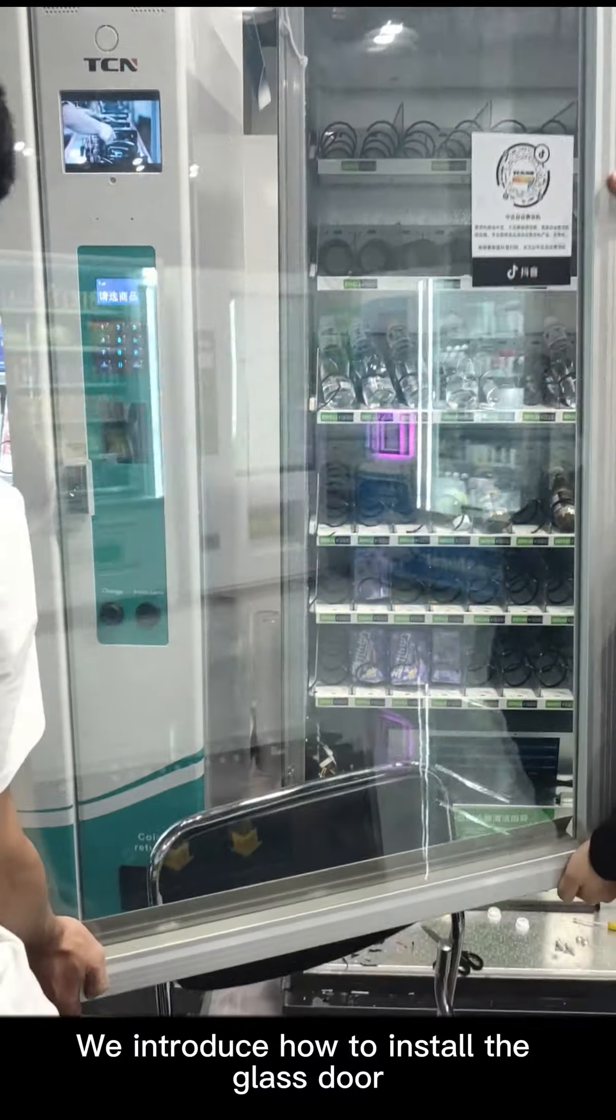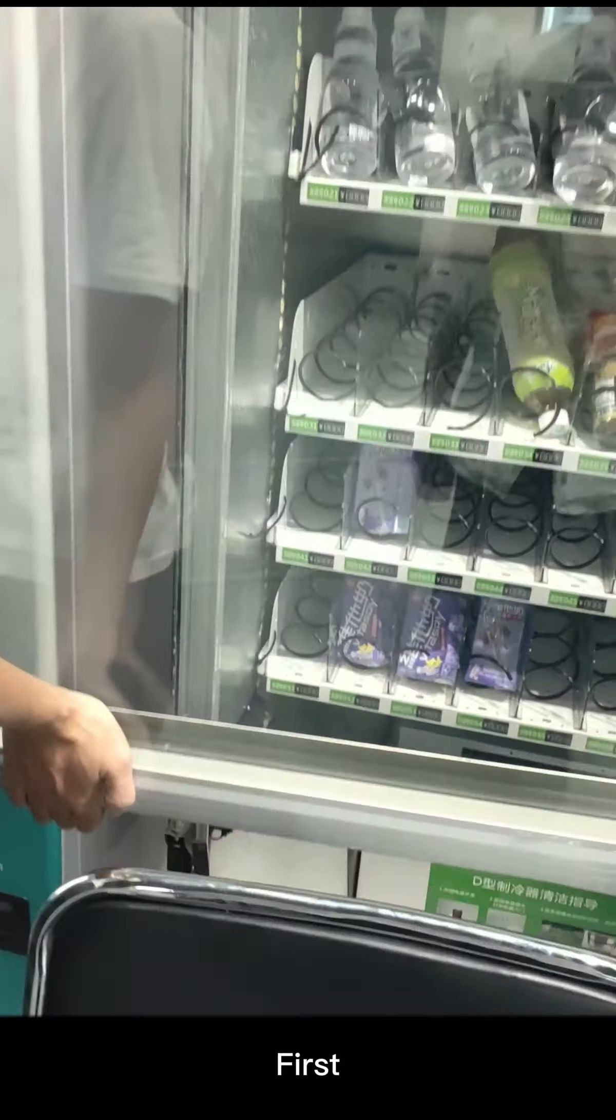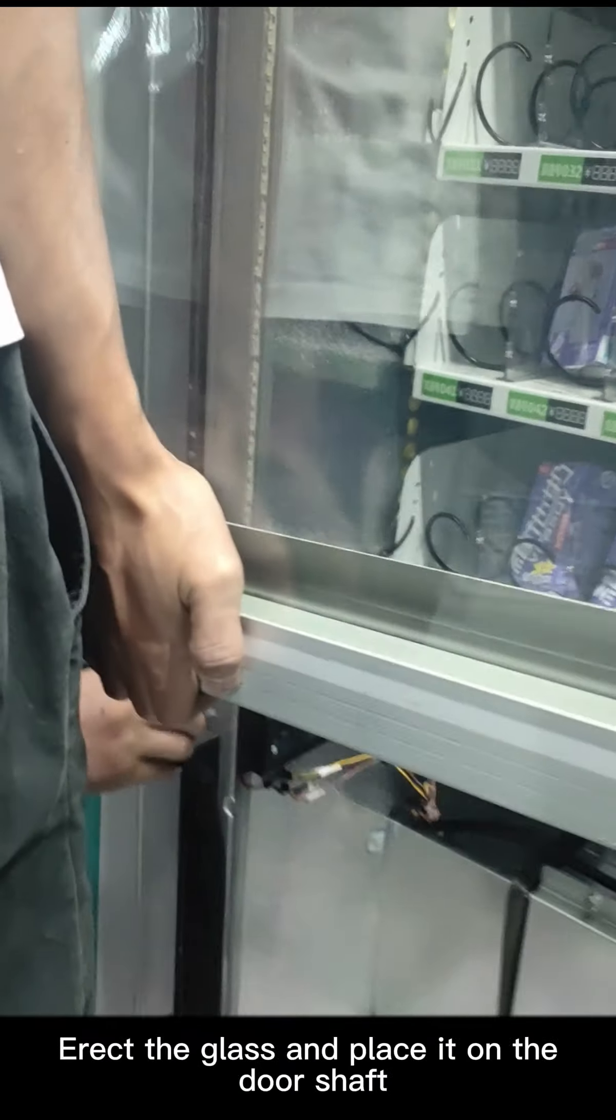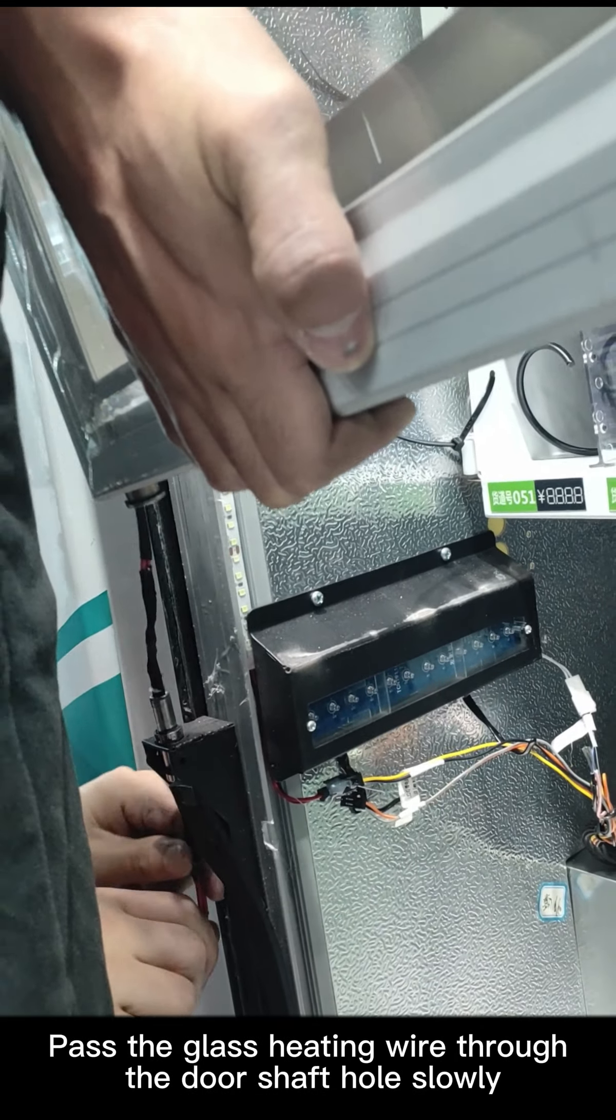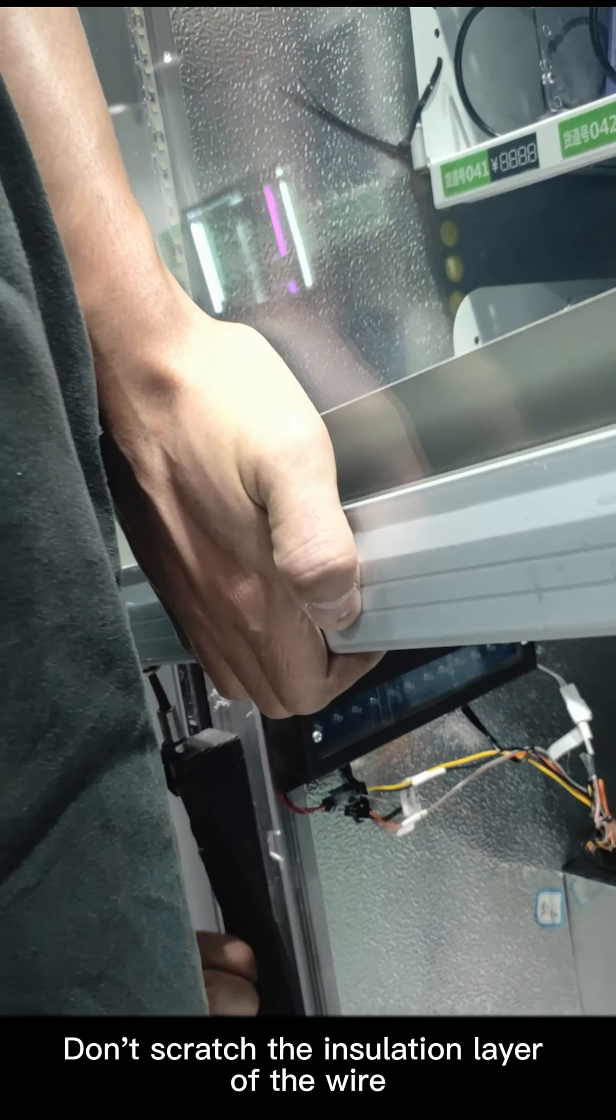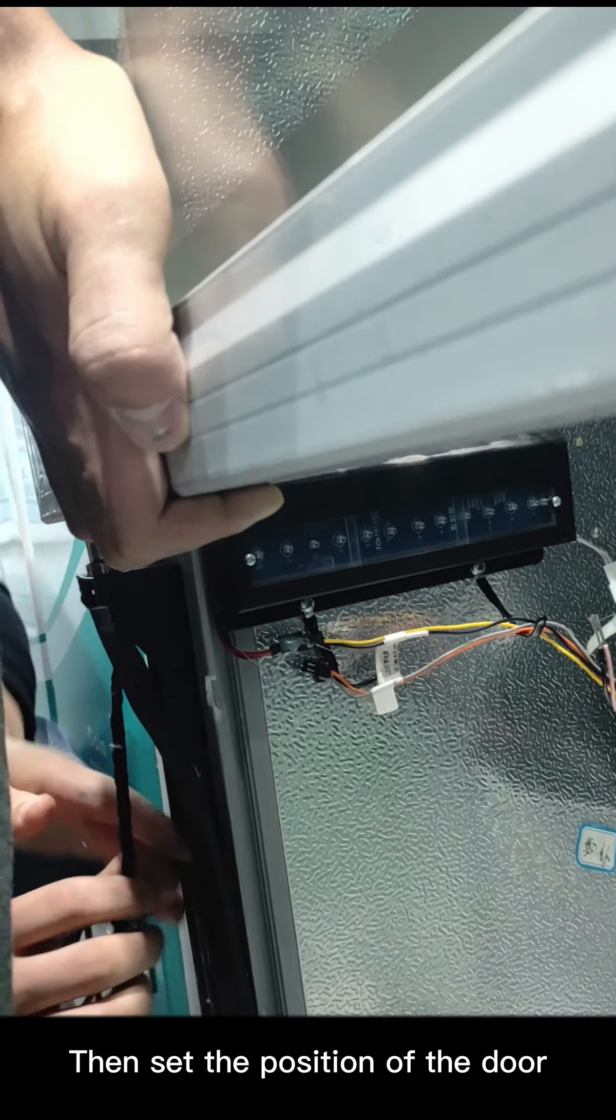Next, we introduce how to install the glass door. First, erect the glass and place it on the door shaft. Pass the glass heating wire through the door shaft hole slowly. Don't scratch the insulation layer of the wire. Then set the position of the door and install the top clamp.